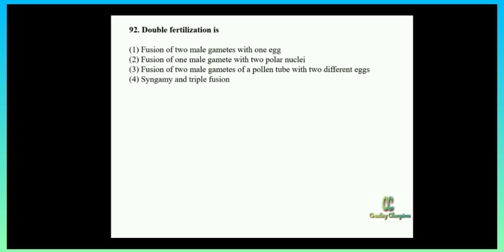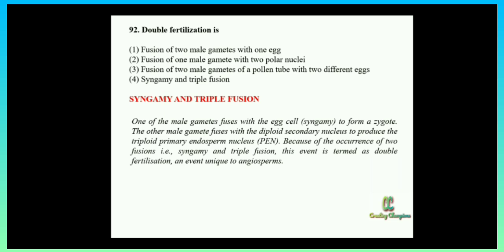The answer is syngamy and triple fusion. In double fertilization, one of the male gametes fuses with the egg cell to form a zygote — that process is called syngamy. The other male gamete fuses with the diploid secondary nucleus to produce the triploid primary endosperm nucleus — that process is called triple fusion. Because of these two fusions, syngamy and triple fusion, this event is termed double fertilization. It is a unique event to angiosperms.